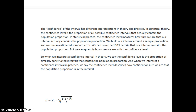The confidence level measures how sure we are that our interval actually contains the true population proportion. We build the interval around the sample proportion and use the estimated standard error to get the margin of error. We can never be 100% certain our interval contains the population proportion, but for a 95% interval we're 95% confident it does. In theory, the confidence level is the proportion of similarly constructed intervals containing the true population proportion; in practice, it describes how confident we are that the population proportion is in the interval.